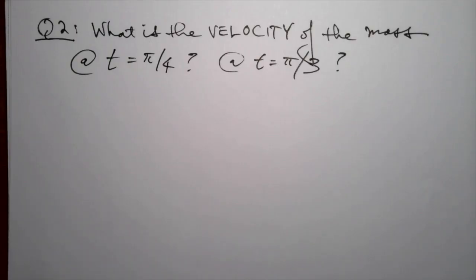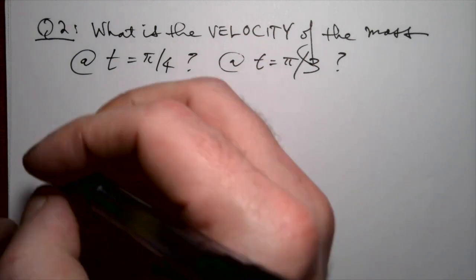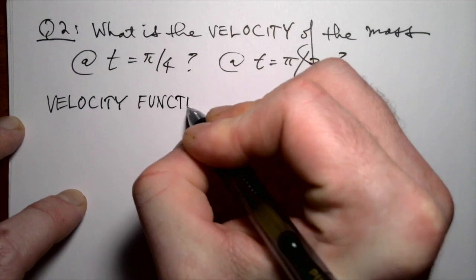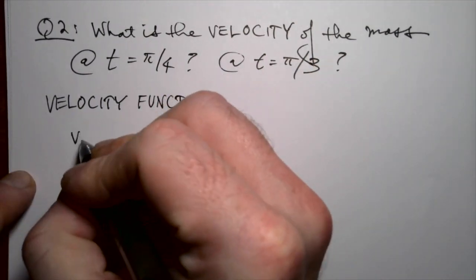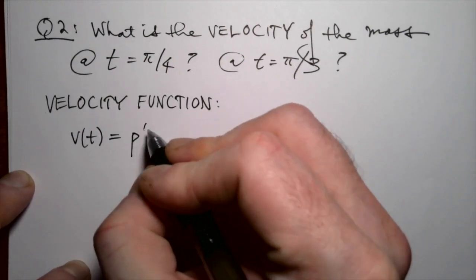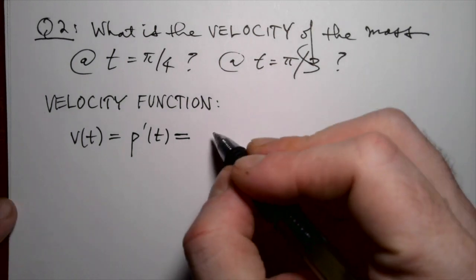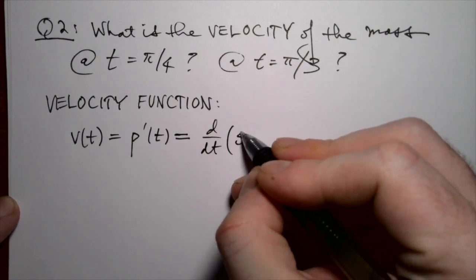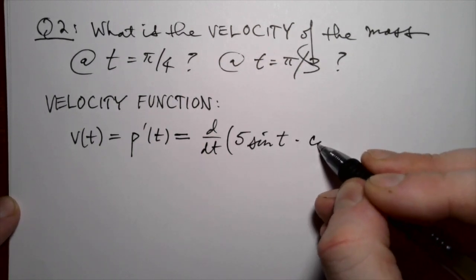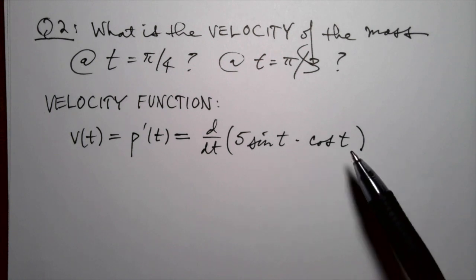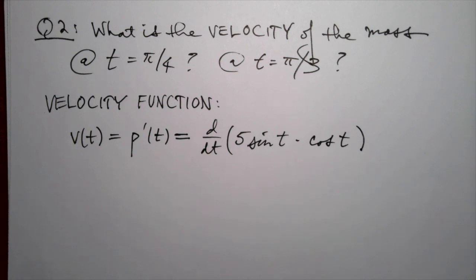Next question: what is the velocity of the mass on the spring at pi over 4 and pi over 3? Velocity means the instantaneous rate of change of position. So the velocity function v of t is given by the first derivative of the position function. The position function is 5 sine t times cosine of t, so we need to take the derivative of this product — that means we've got to use the product rule.